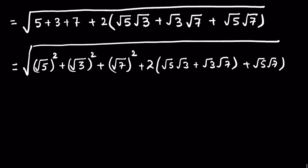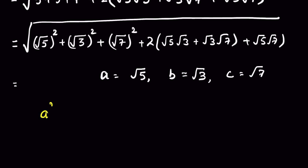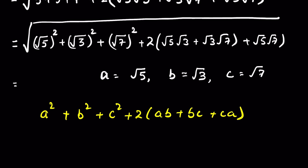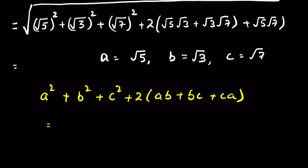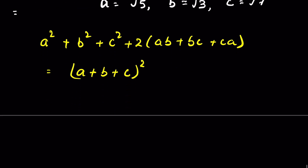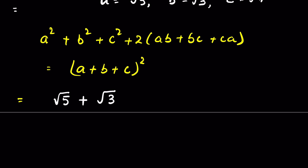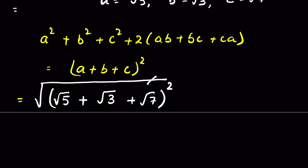This might look difficult but it's simple mathematics. If we let a = √5, b = √3, and c = √7, then this expression is in the form a² + b² + c² + 2(ab + bc + ca), which is the algebraic identity (a + b + c)². So we can write it as √[(√5 + √3 + √7)²] under the square root.